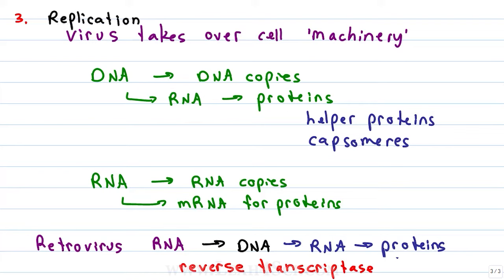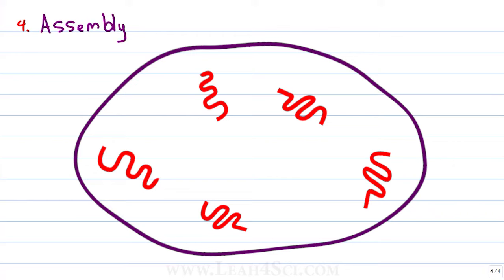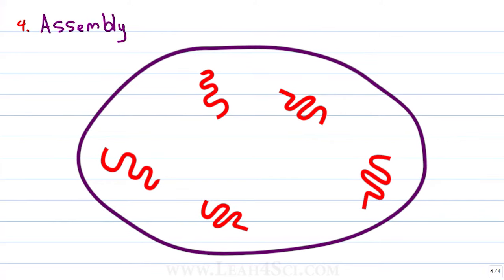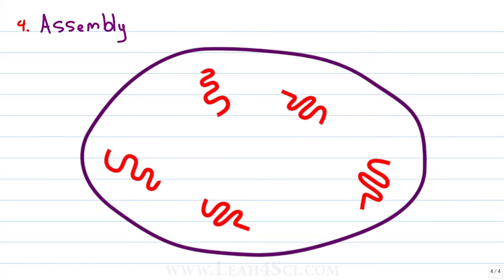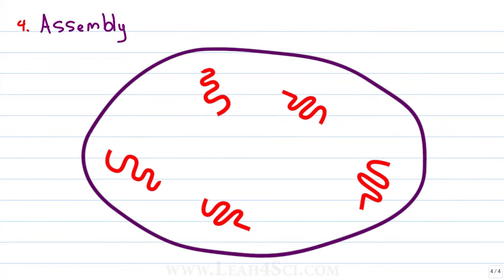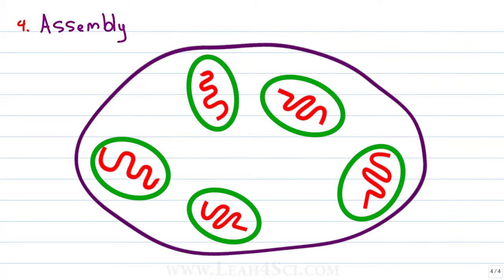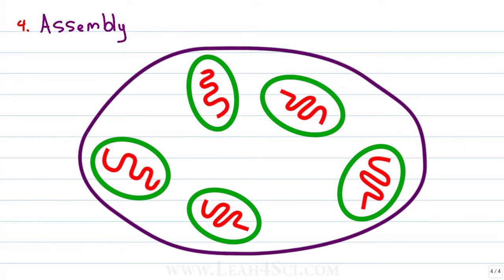Once the cell has made thousands and thousands of copies of the DNA, RNA and proteins, we get to the next step, assembly. Once the cell has made hundreds of copies of the viral DNA, the viral RNA and the proteins, simple viruses will start to self-assemble. More complex viruses will have their proteins helping assemble them but all we're doing here is packaging up the DNA or the RNA surrounded by a capsid and anything else that specific virus requires.